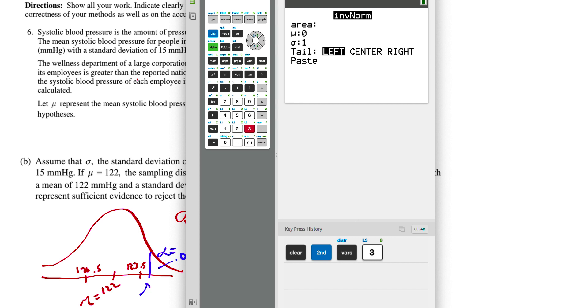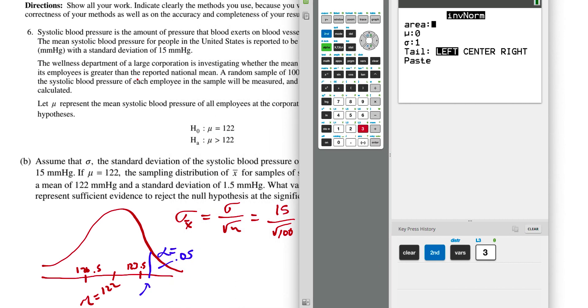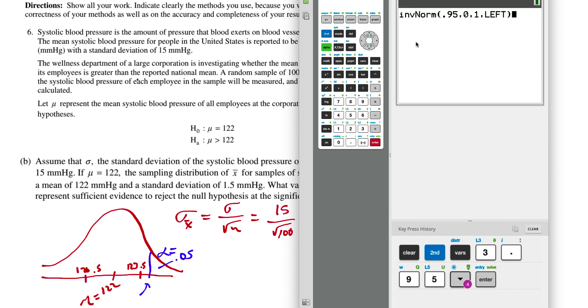The area, remember, it's always the area to the left is normally how we do it in class. I'm going to use 0, 1 because I want to find the z-score right now. I'm going to plug in 0.95, and that's just going to give us a value of 1.64.